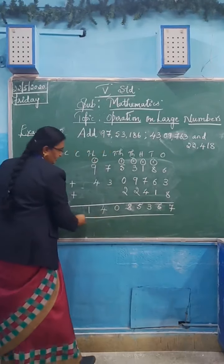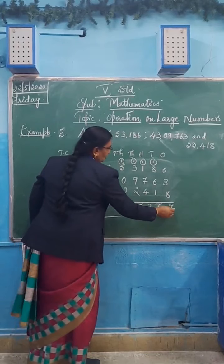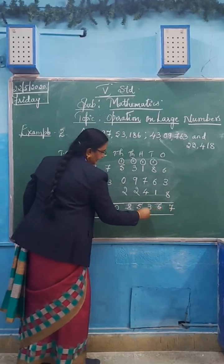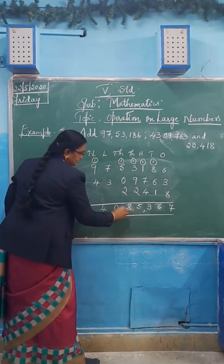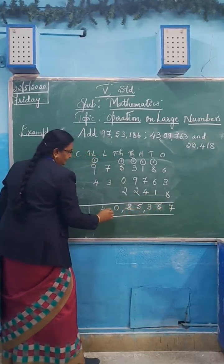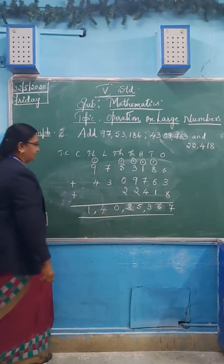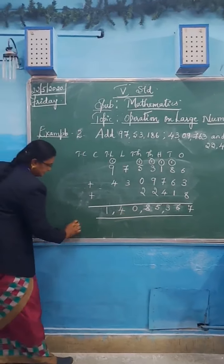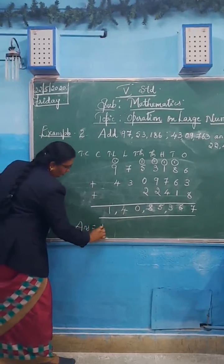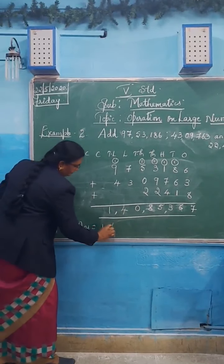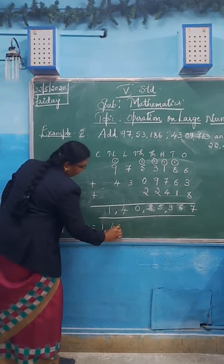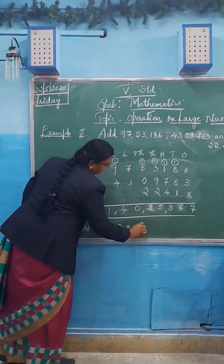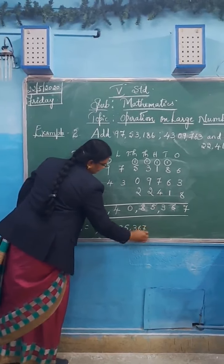So here you got the answer. Ones, hundreds — put a comma — thousands, ten thousands, comma — lakh, ten lakh, one comma. So your answer is one crore, forty lakhs, eighty-five thousand, three hundred and sixty-seven.